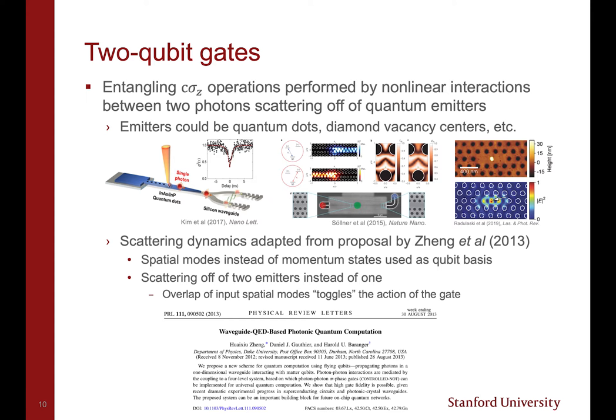In addition to arbitrary single qubit gates, the QPGA needs to be able to implement two-qubit entangling operations in order to be computationally universal. This is accomplished using non-linear interactions between two photons scattering off of a pair of quantum emitters embedded within the waveguides.